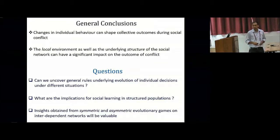So I'll end here with some general conclusions. We see that changes in individual behavior can and do shape collective outcomes during social conflict, and the local environment as well as the underlying structure of the population plays an important role in determining the outcome of the conflict at the level of the population. And I'll leave with some questions as food for thought, which can hopefully be discussed in more detail during the discussion sessions. Can we uncover general rules underlying evolution of decisions under different scenarios? These rules will obviously not be universal. They have to be tailored to specific situations. But still, can we formulate rules by which people change their decisions over time? Because this has implications for social learning in structured populations, and perhaps insights can be obtained from symmetric and asymmetric evolutionary games on such networks.